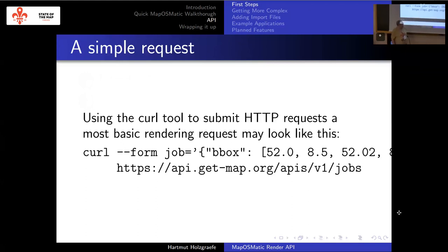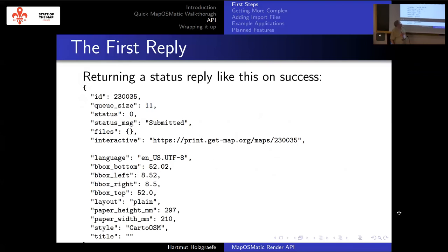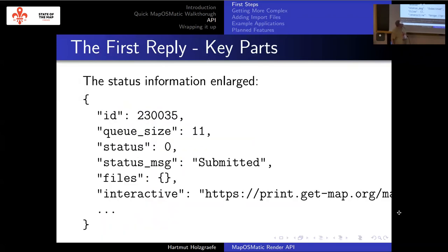What you get back is a larger JSON document that in the bottom part has all the defaults that were chosen. The top part gives you feedback on the status of the request. The most important thing you get back is the job ID that got assigned — something like 230,000. You get information on how many other jobs are still ahead of you in the render queue — here you are at position number 11. The current status of the job is 'submitted' but not rendering yet, and there are no results yet.